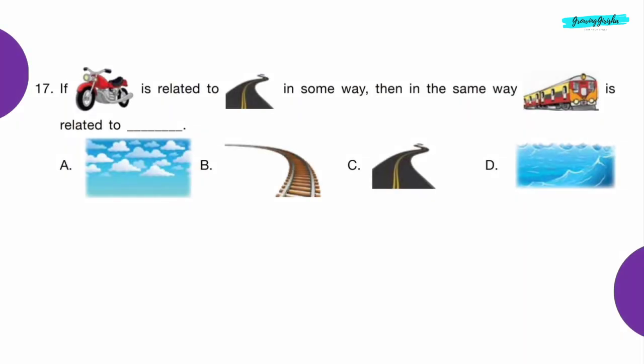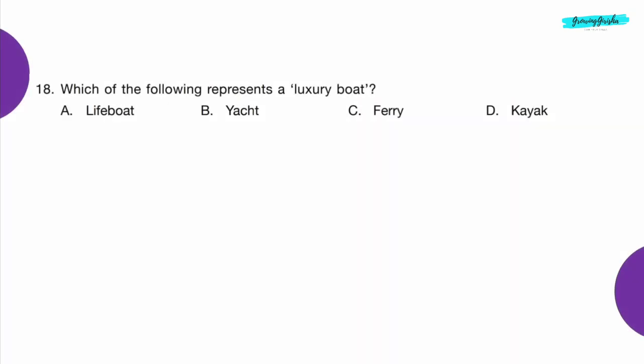Question 17: If bike is related to road in some way, then in the same way, train is related to dash. Option B — Railway track.